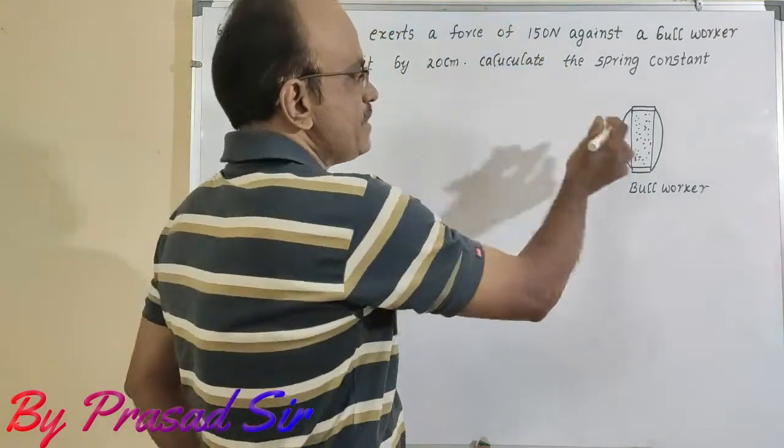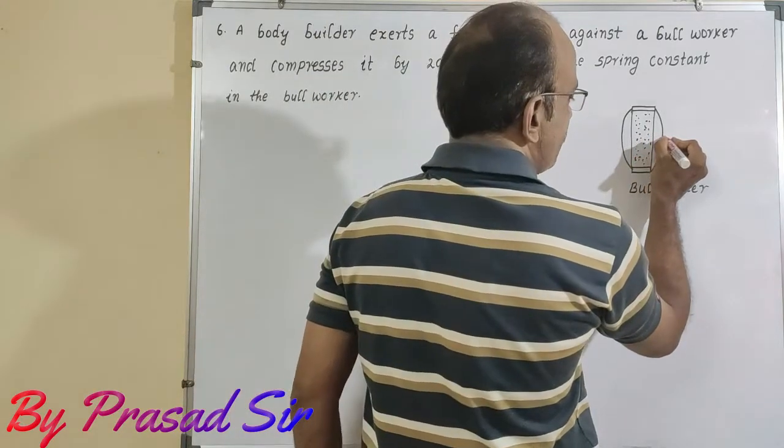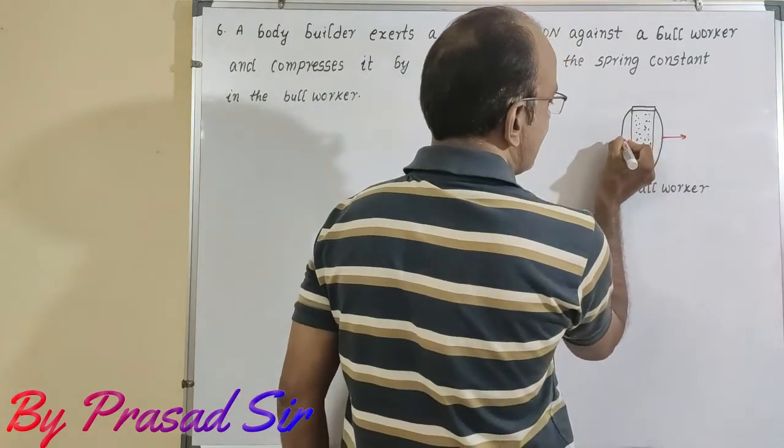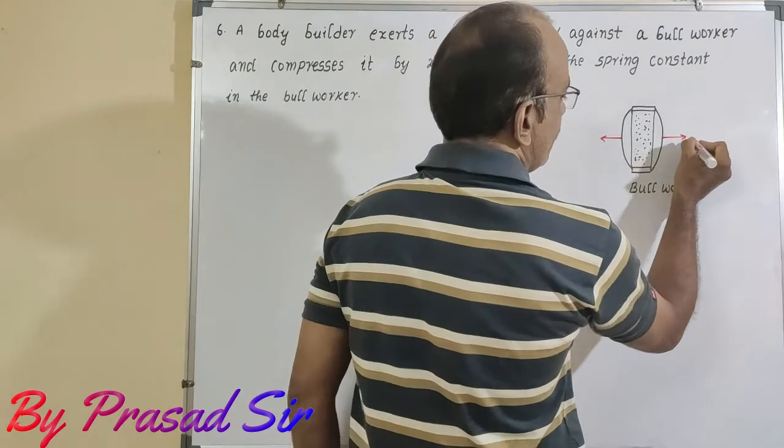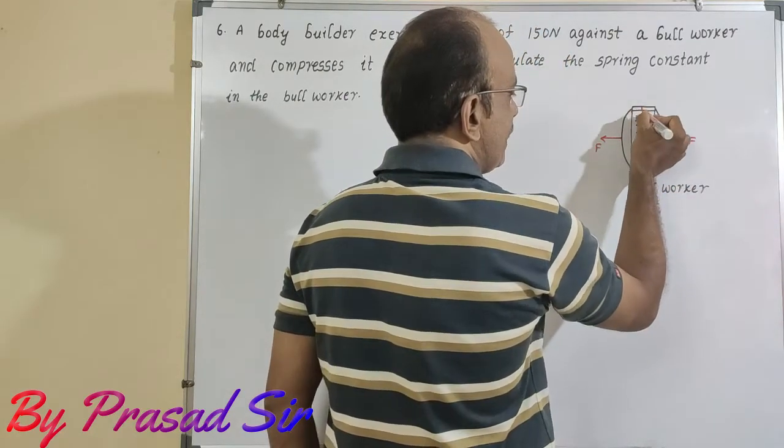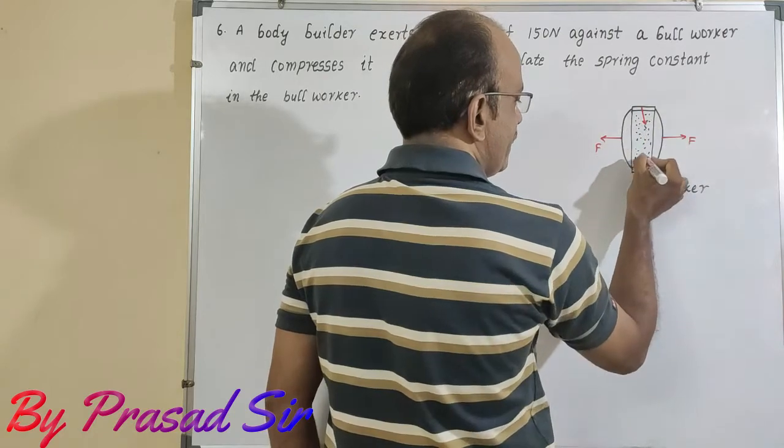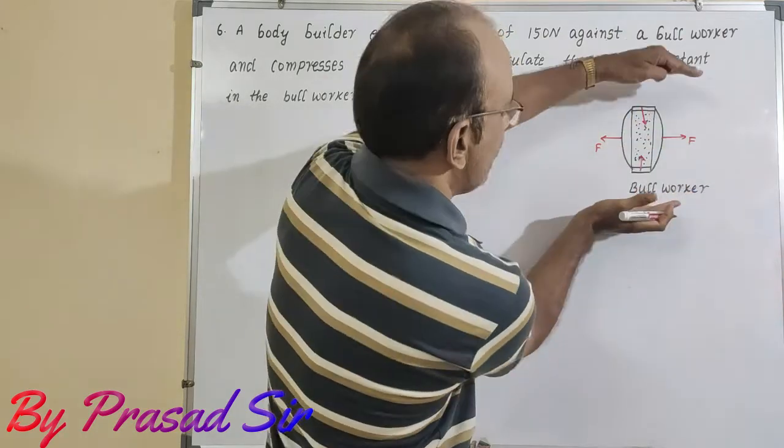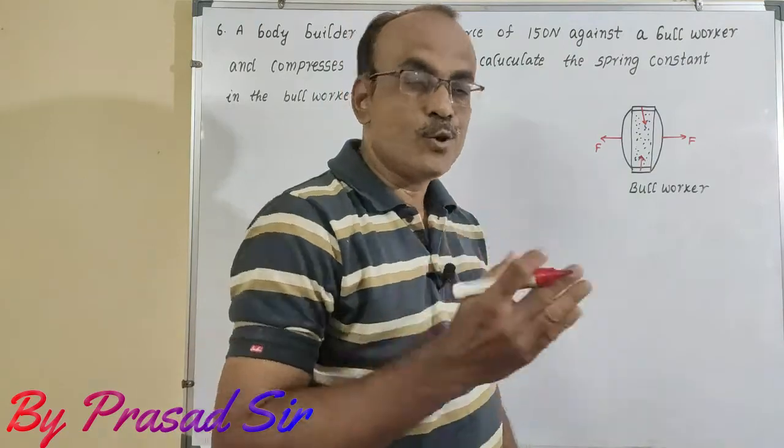Here observe this is the bulwarker. The bodybuilder applies the force in this direction like this. That is the force which is applied. Then immediately what happens here? It is getting down and it is also moving up. That means there will be compression takes place in the bulwarker.